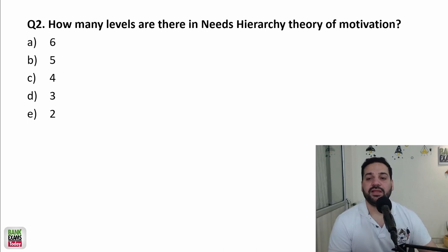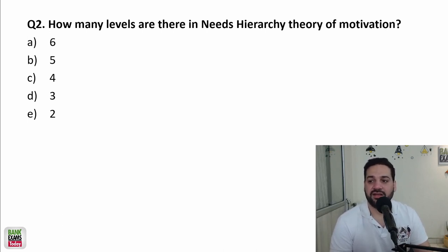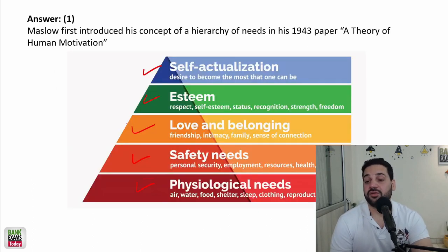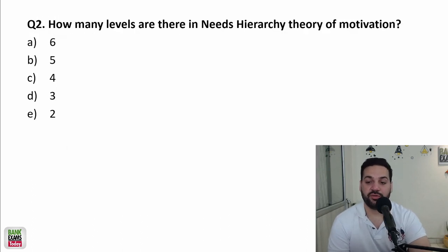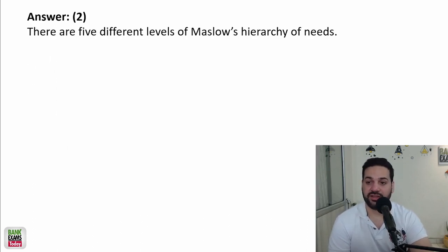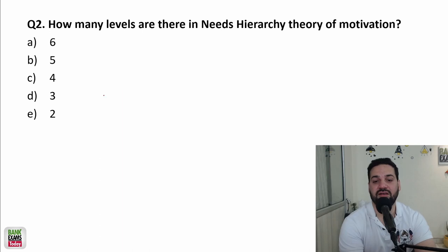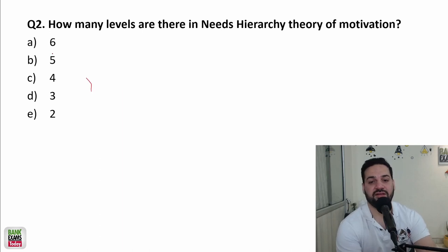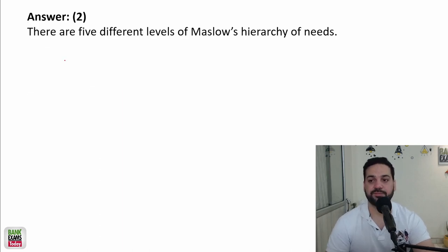How many levels are there in the needs hierarchy theory of motivation by Maslow? There are five levels: physiological, safety, love and belongingness, esteem, and self-actualization. Five is the correct answer.